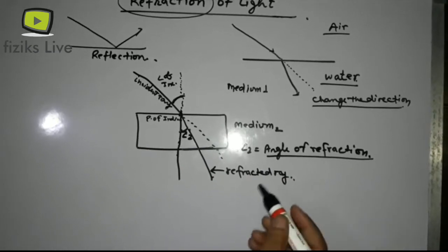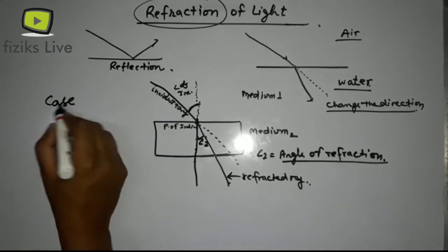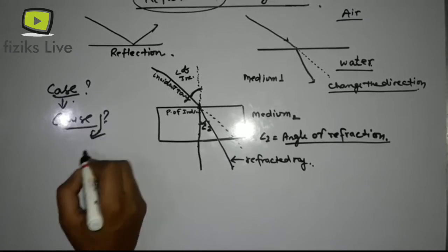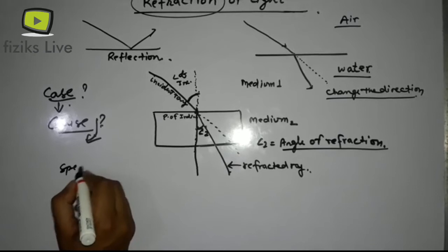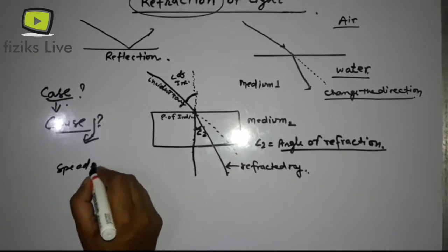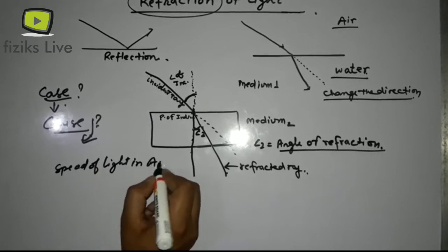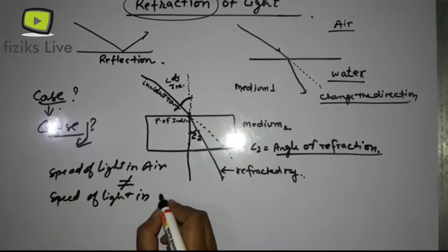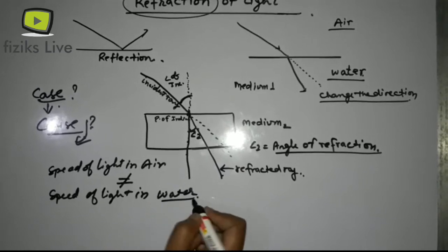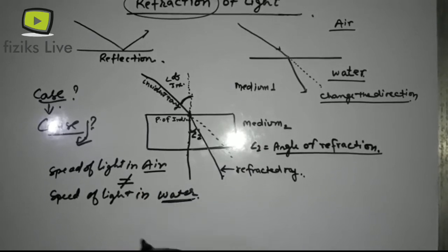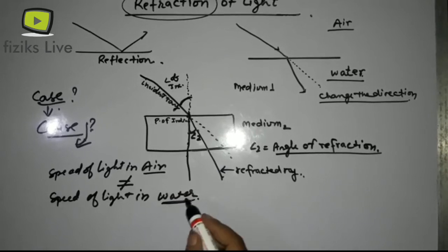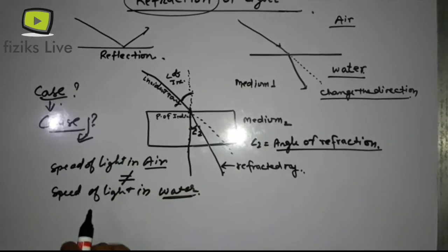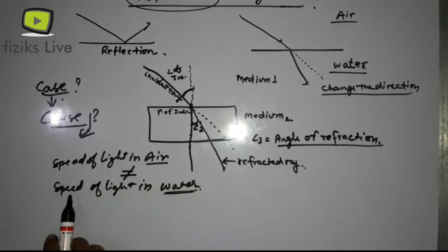What is the cause of refraction? The cause of refraction is that the speed of light in air is not equal to the speed of light in another medium like water. The speed of light is different in air and in water — this is the reason refraction occurs. When light strikes and enters another medium, it gets disturbed because the speed of light in air is totally different from the speed of light in water.